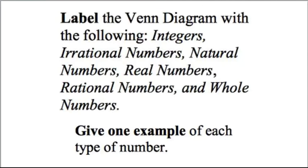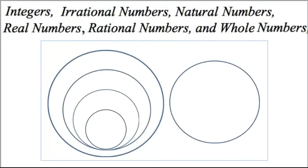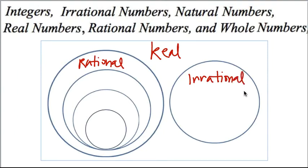For number three, you'll be labeling a Venn diagram and giving an example of each type of number. So you'll have to decide which way you go through. Do you want to start on the outside and work your way in? Like all numbers are real. Then from real, you have rational and irrational. I know rational goes in this left side because rational breaks down to a lot of different types of numbers.